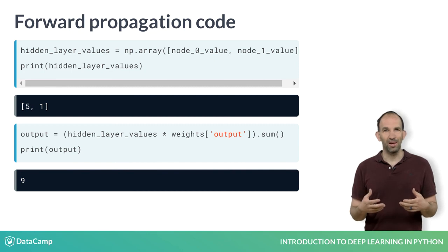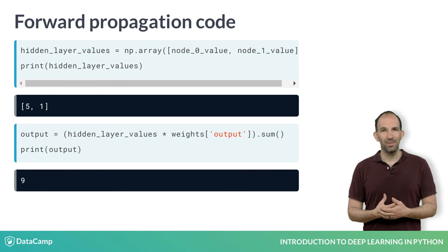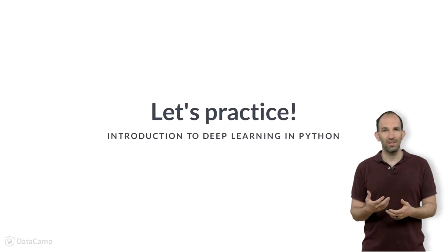To get the output, we multiply the values in the hidden layer by the weights for the output. Summing those together gives us 10 minus 1, which is 9. In the exercises, you'll practice performing forward propagation in small neural networks.